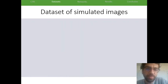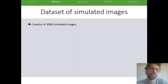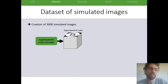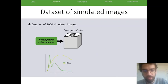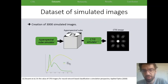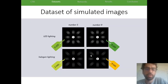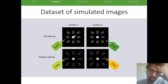We also created a dataset of simulated images. We created a bunch of those using a hyperspectral cube simulator. We just simulated a number with a different type of lighting, so either LED or halogen. And then we used a CTIS simulator we had published in a previous paper to get CTIS images out of these hyperspectral cubes. And as for the real images, we had four different types of class.